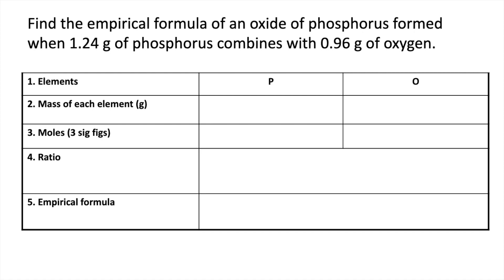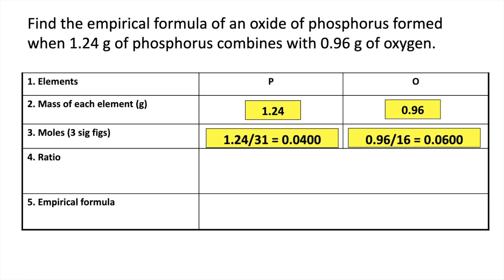For the last one we've got an oxide of phosphorus now. Same method. Masses go in. Moles to three significant figures. Divide by the smallest. We get a 1 to 1.5 ratio.